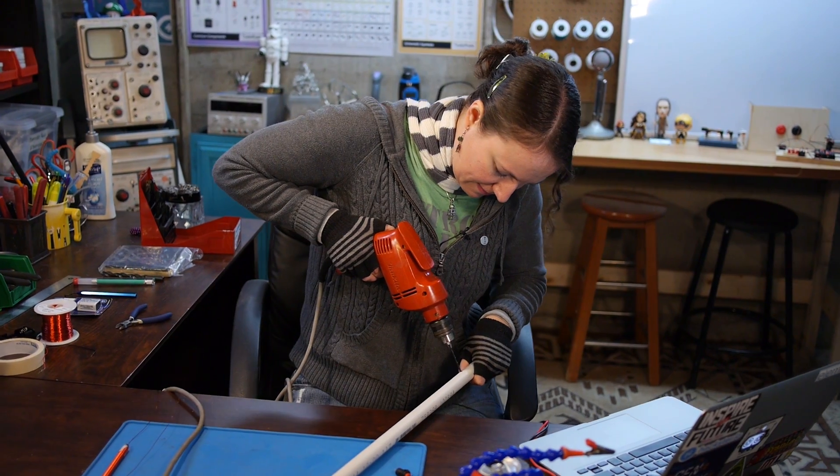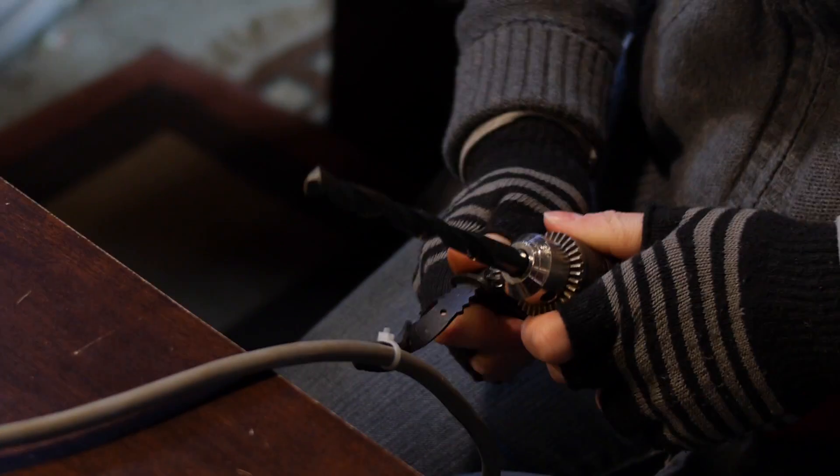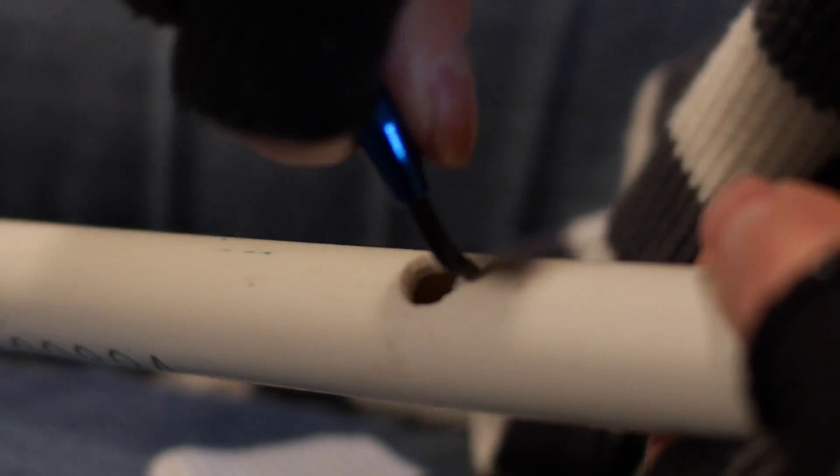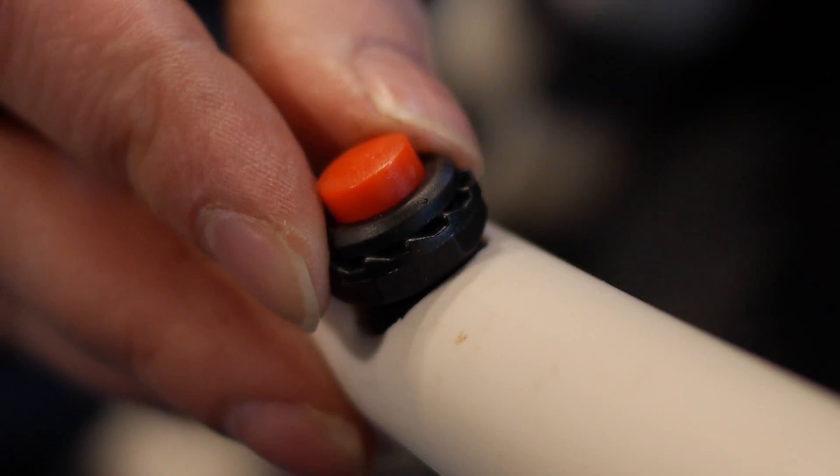First, we'll drill a pilot hole. Then, we'll use a bigger bit closer to the size of our button. Unfortunately, the chuck in my drill isn't big enough to fit a drill bit the size I need for my button, so I'm using this reamer that's used for sheet metal to make my hole bigger. Make sure your button can fit in the hole, but don't glue it in place yet.